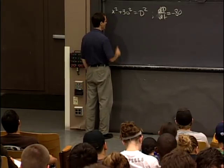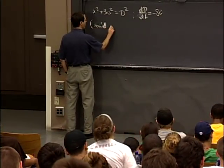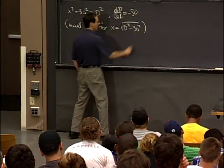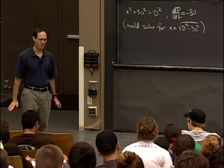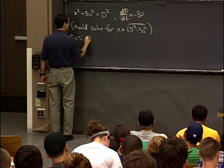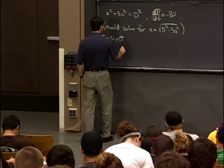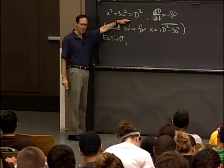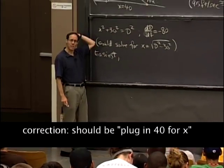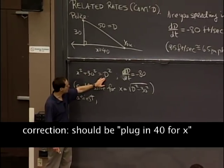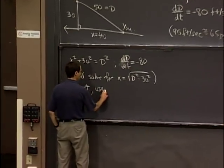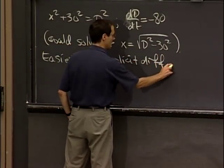You could solve for x — x is the square root of d squared minus 30 squared — but this is basically a waste of time. It's easier, or easiest, to follow implicit differentiation. We just differentiate this equation with respect to time. When you do that, you have to remember you are not allowed to plug in the constant 40 for x yet. You have to keep in mind that x is changing and d is also changing. So differentiate first before you plug in the values.